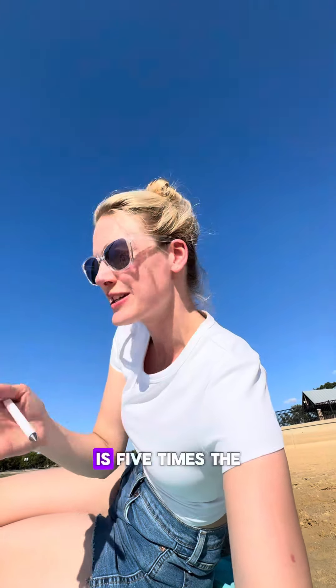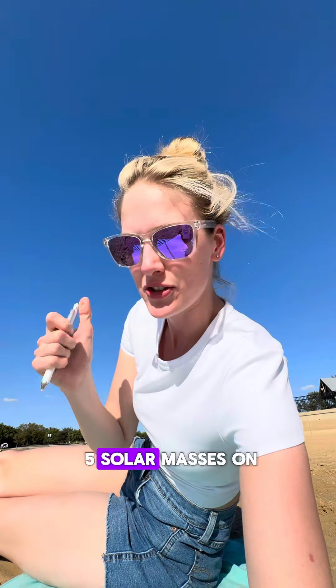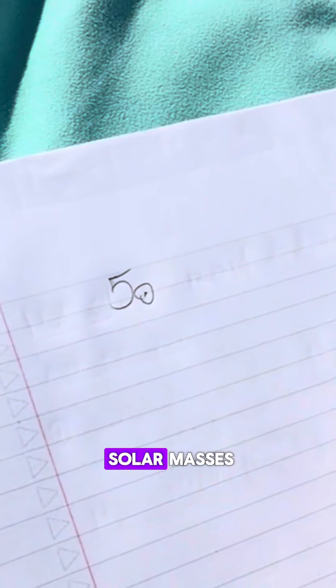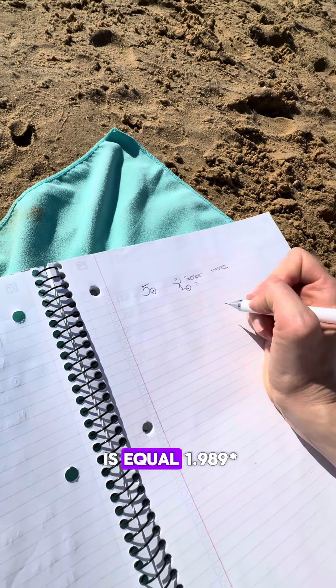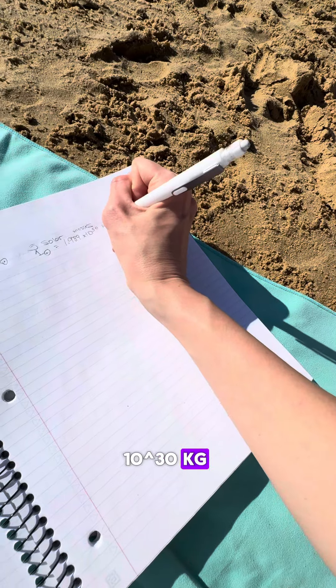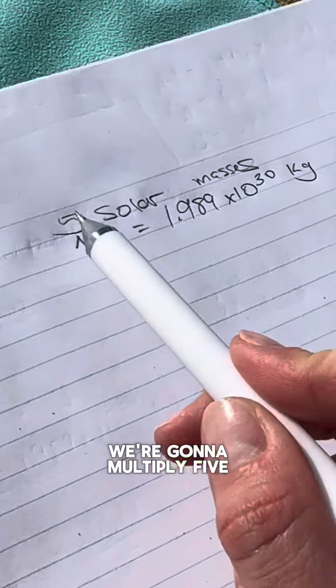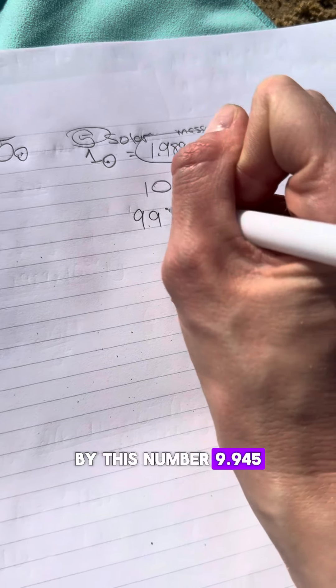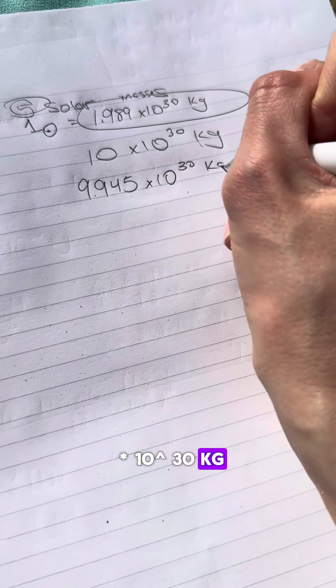We're going to work with a black hole that is five times the mass of our sun. So let's write down five solar masses on our paper. Astronomers like to use this little circle with a dot in the middle to represent solar masses. One solar mass equals 1.989 times 10 to the 30 kilograms, so we multiply five by this number to get 9.945 times 10 to the 30 kilograms.